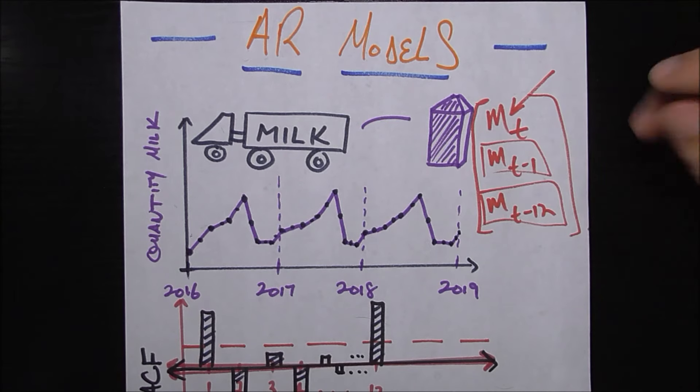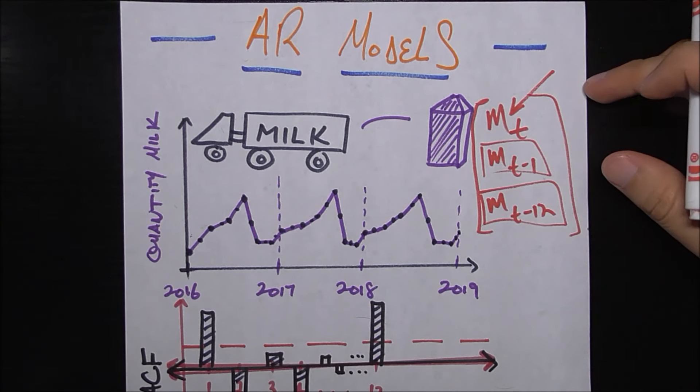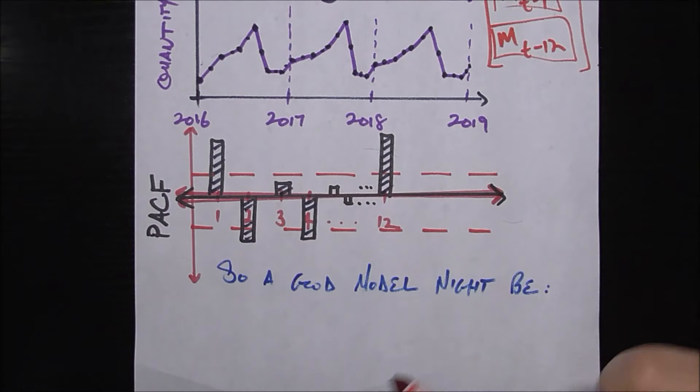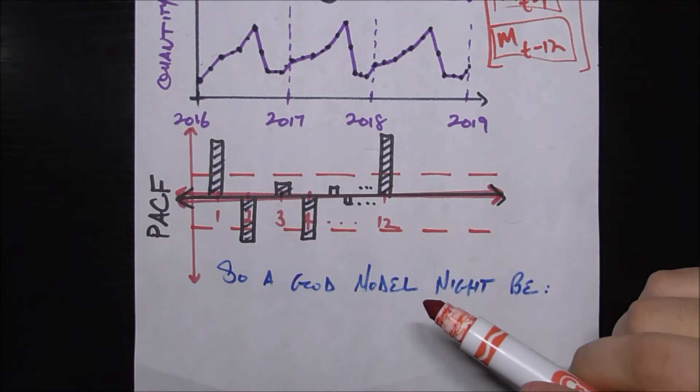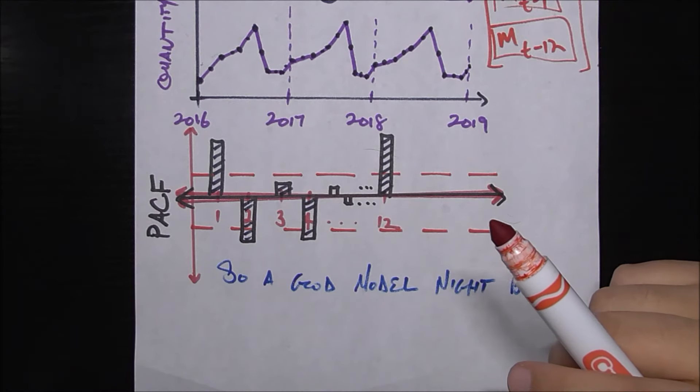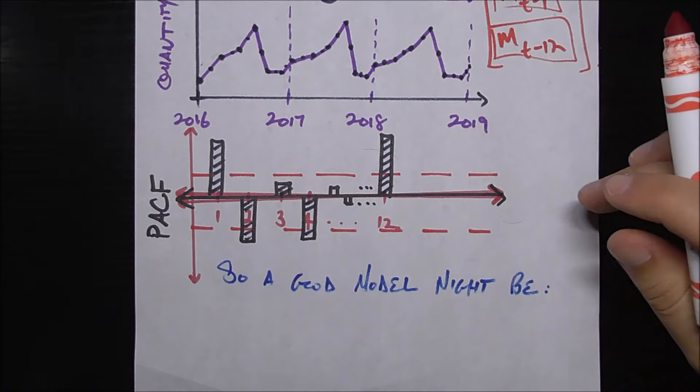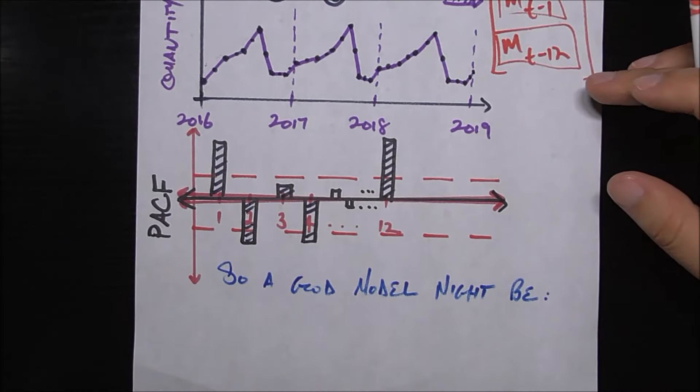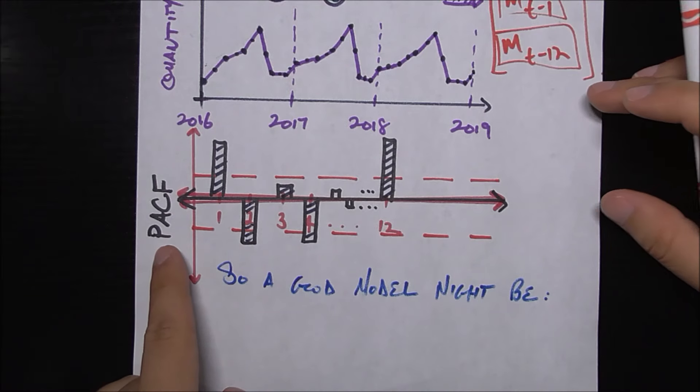For that reason we want to figure out only which lags, only which of these t minus what are important for our situation. We're gonna be using our good friend the PACF chart or partial autocorrelation function. If you haven't seen my video on autocorrelation and partial autocorrelation go ahead and watch that.